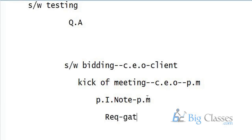After the Project Initiation Note, the next stage is requirement gathering. Requirements are the client's expectations — for example, if a client establishes a bank and needs a bank website, they might need certain logos, colors, and features. Those are the client's requirements.